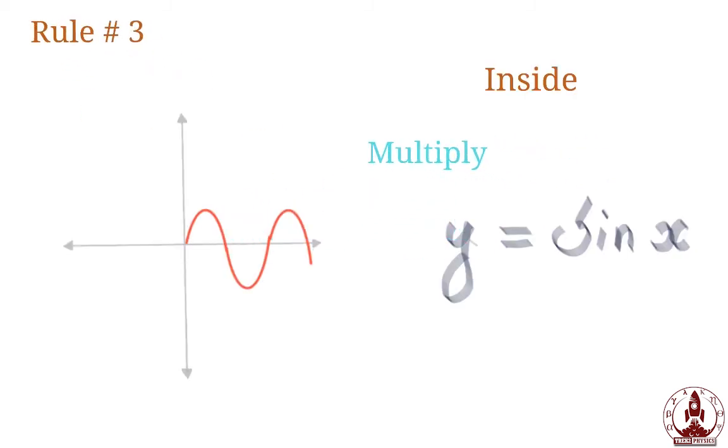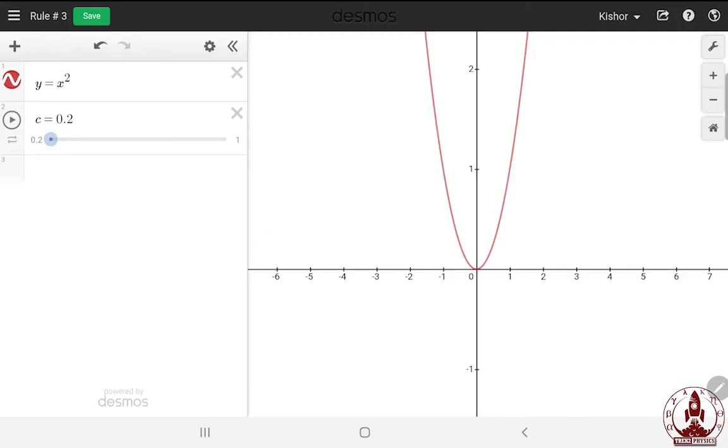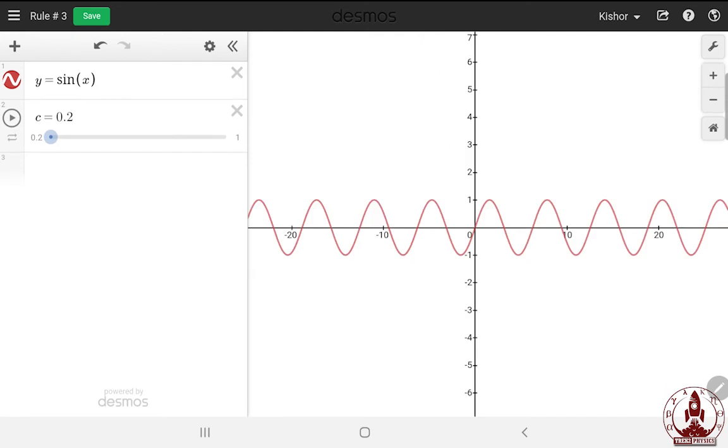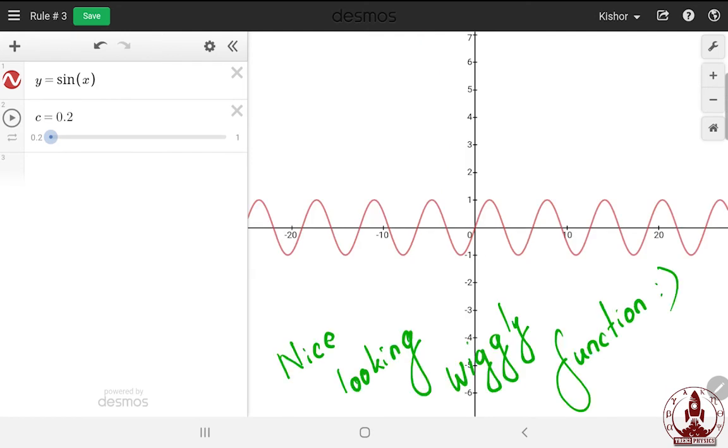Now, rule number three. What if I multiply Y with a constant C? Let's put it into action in our graphical calculator. First, let's change our function from U shaped back to wiggly one. Nice looking wiggly function.